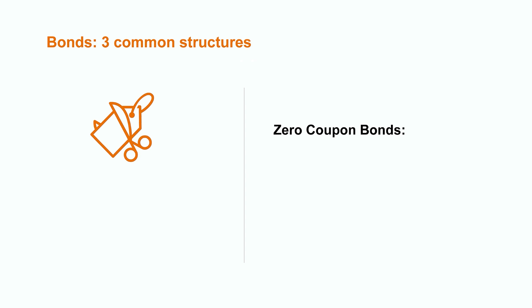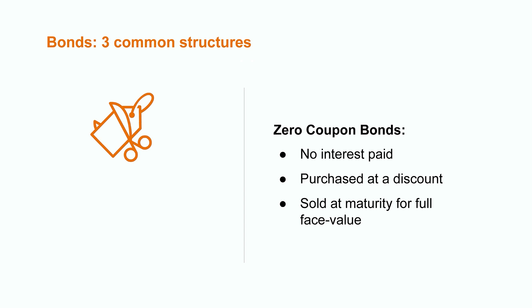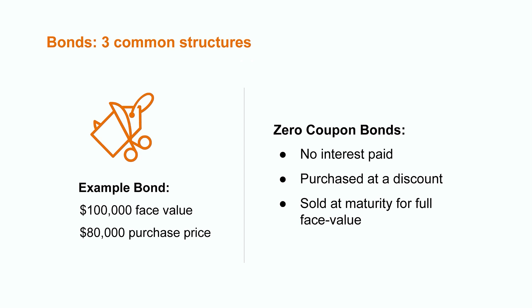Zero coupon bonds, in contrast, do not pay any interest. Instead, companies attract investors to these types of bonds by issuing them at a discount. With these bonds, investors earn a profit at the maturity date by redeeming the bond for its full face value. Let's look at a quick example. Let's say a company sells a bond with a $100,000 face value for a 20% discount. This means that the investor would only have to pay $80,000 and would be able to sell it back in the future for the full $100,000, resulting in a $20,000 profit in their pocket.